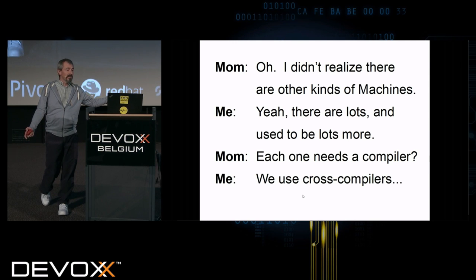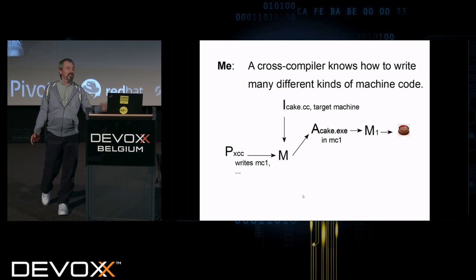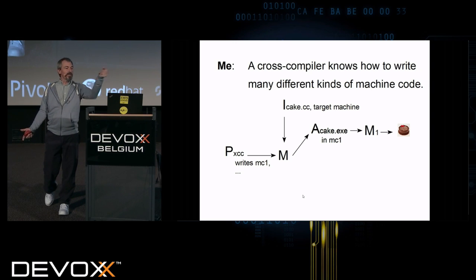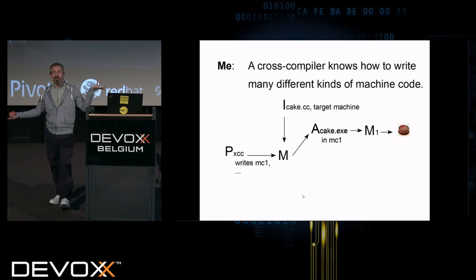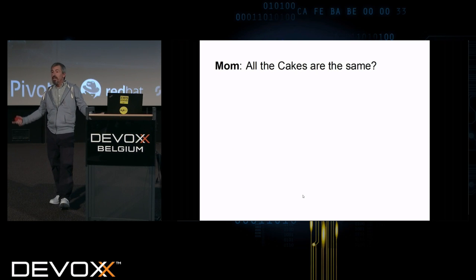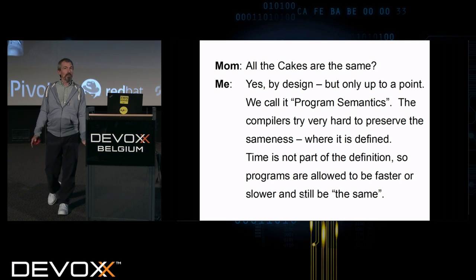And each one needs a compiler? Well, we use cross-compilers. A cross-compiler knows how to write many different kinds of machine code. So it takes as an input a program in some language you want and the kind of machine you're going to target. And the cross-compiler here will run on a machine and read your cake.cc and produce out a bunch of machine code for machine number one. And you can run that on machine one and get a cake. Or machine two or machine three. And all the cakes are the same?